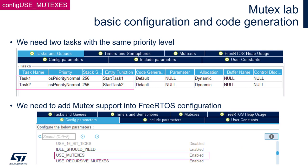Let's start from STM32CubeMX or STM32CubeIDE configurations. Please go to the FreeRTOS Configuration tab and select Tasks and Queues. Create two tasks within the task list. We need to have two tasks, task 1 and task 2, with the same priority level — it can be OS priority normal — the same stack size, and function names like StartTask1 and StartTask2.